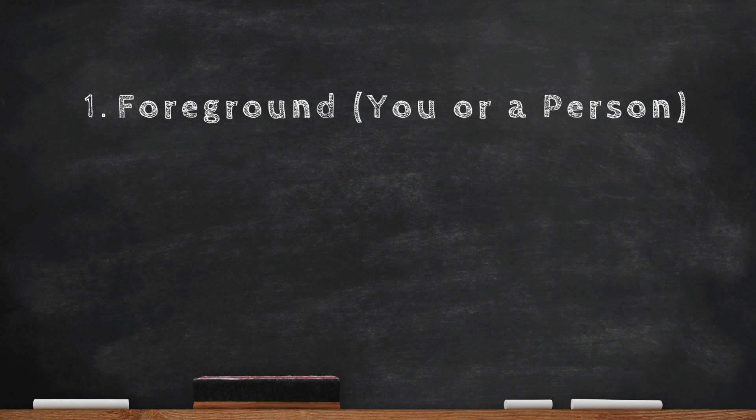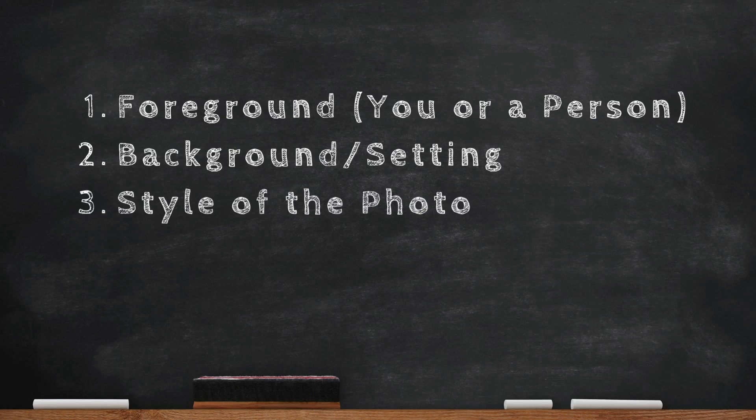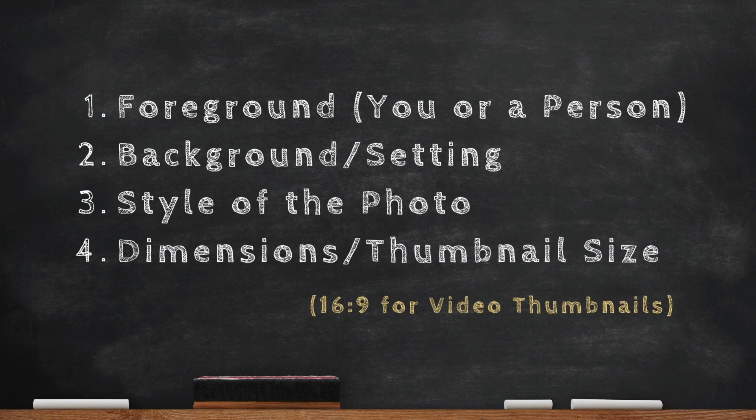Step three is to write your prompt. We're going to use an AI image generator to generate a thumbnail, but first you need to describe what you want so AI can work its magic. There are four parts to include in your prompt: the foreground — usually the person, so you describe yourself; the background — the setting and environment; the style of the photo, such as realistic or anime; and lastly, the dimension of the photo.